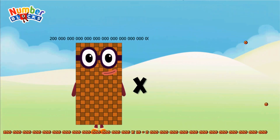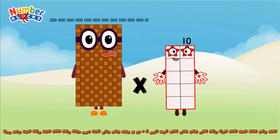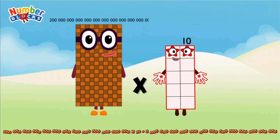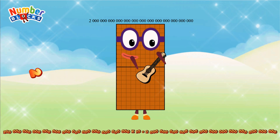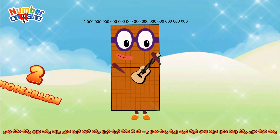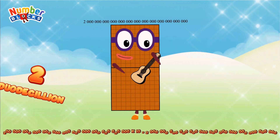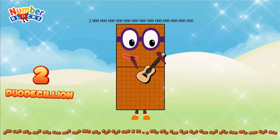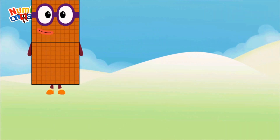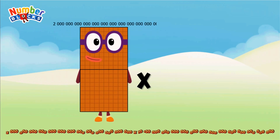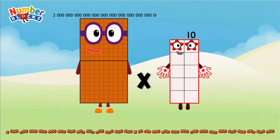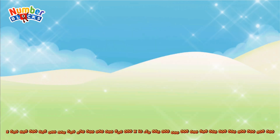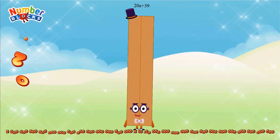Two hundred undecillion, multiplied by ten, equals two duodecillion. Two duodecillion, multiplied by ten, equals twenty duodecillion.